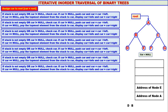Now, stack is not empty or curry not equal to null — stack is not empty but curry is equal to null, so one condition is true. If curry is equal to null, pop the topmost element from the stack. The topmost element is address of node E — that is popped and assigned to curry. Display curry info — E is displayed. Curry moves to curry's right. There is no right child for E, so curry becomes null.